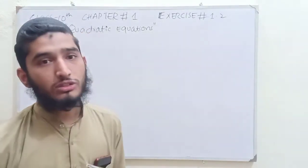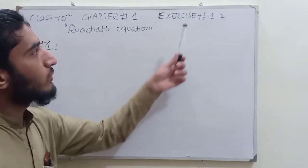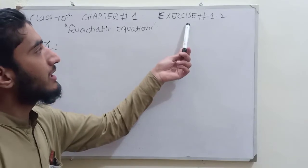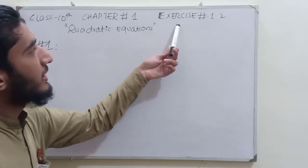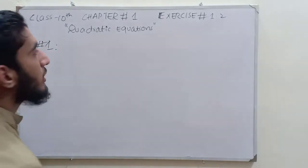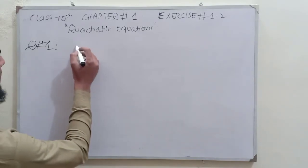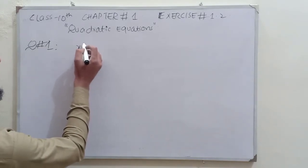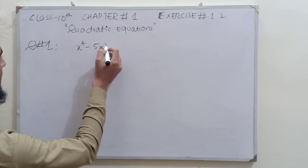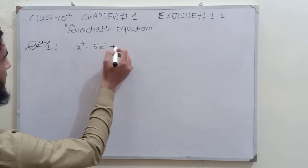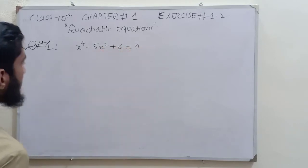Today we are going to start exercise number 1.2. Exercise 1.1 has already been completed. The first question is: x⁴ minus 5x² plus 6 is equal to 0.